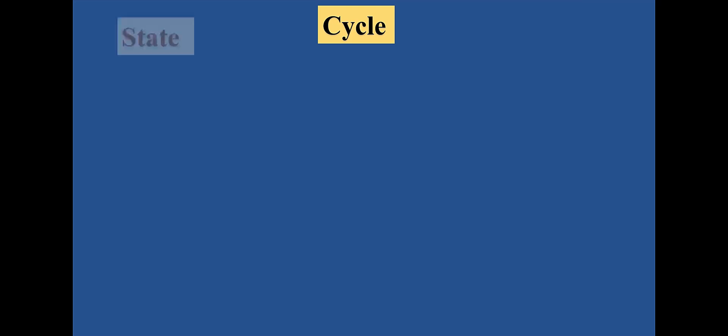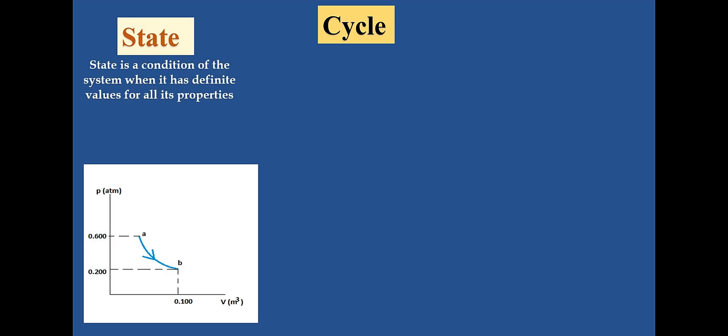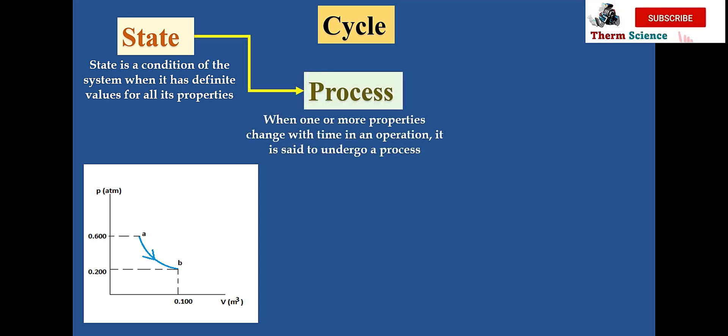To understand cycle, let's get familiarized with two terms: state and process. State is a condition of the system that has a definite value for all its properties. In the graph given below, it can be seen that there are two states, A and B. For state B, the pressure is 0.2 atmosphere for a given volume of 0.1 meter cube. Now, let's discuss process. When one or more properties change at a given time, a change of state occurs and this is called a process.